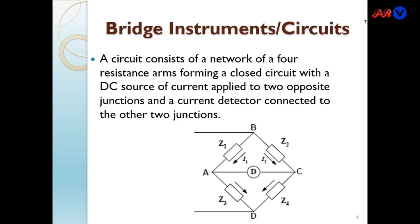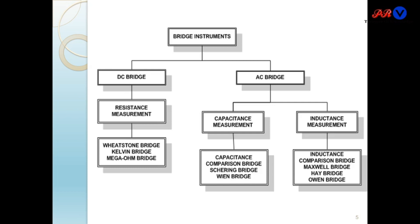The bridge circuit consists of a network of four arms, forming a closed circuit with a DC source of current applied at two opposite junctions. We apply the DC source at terminals B and D, and the current detector — which may be a galvanometer — is connected to the other two junctions. Bridge instruments are classified as DC bridges and AC bridges. DC bridges are used for resistance measurement; examples include the Wheatstone bridge, Kelvin bridge, and Mega Ohm bridge. AC bridges can be used for measurement of capacitance as well as inductive reactance.